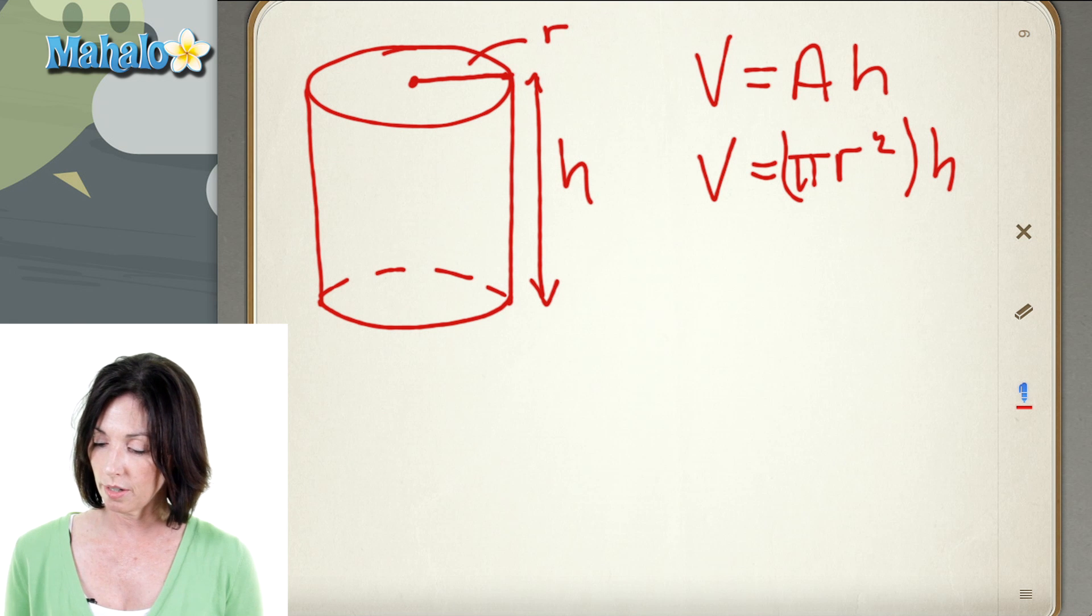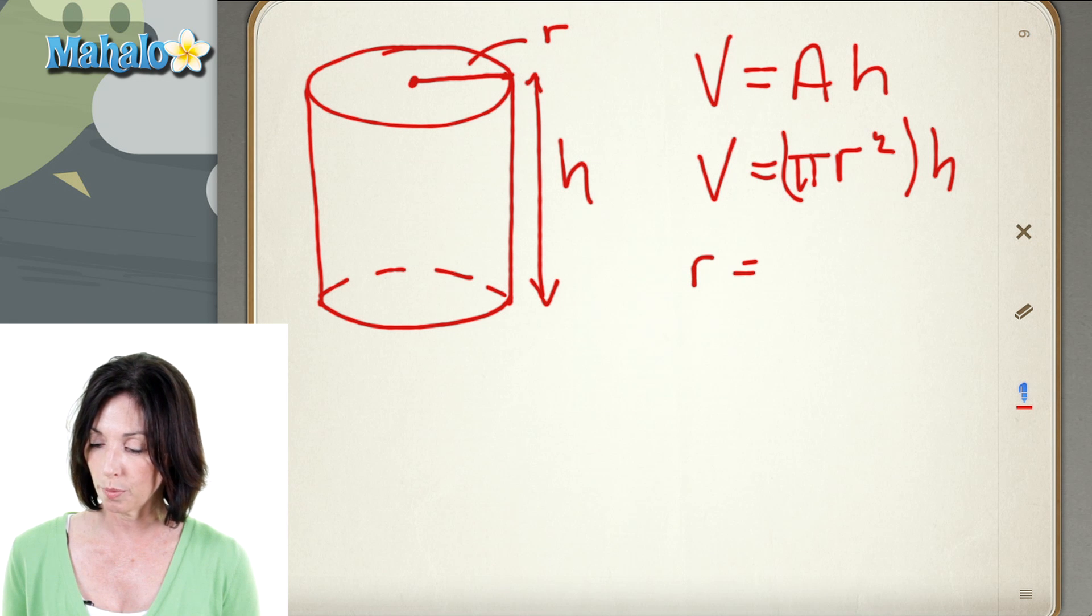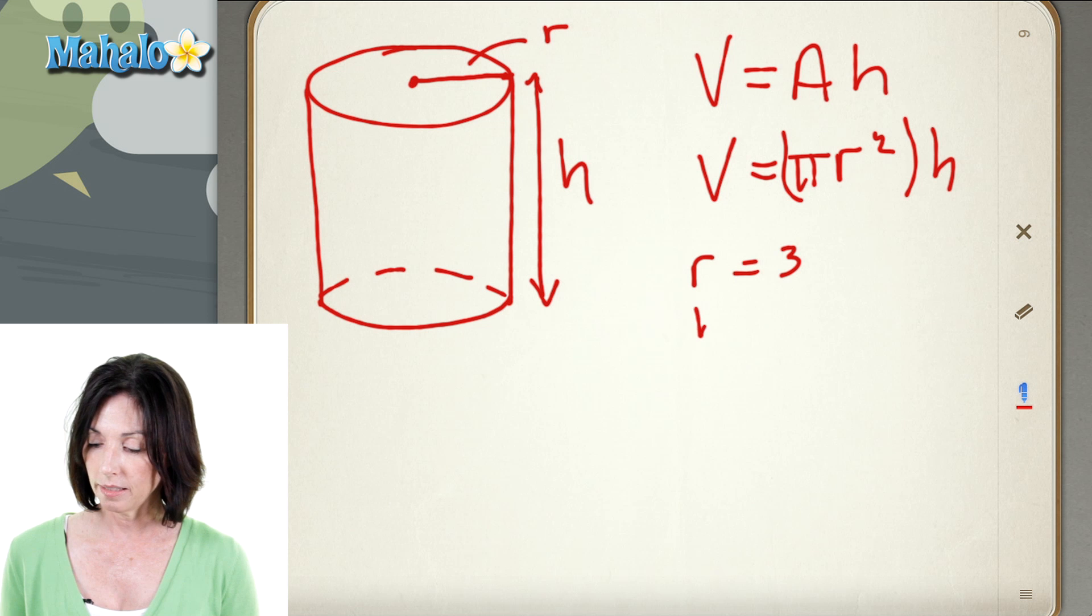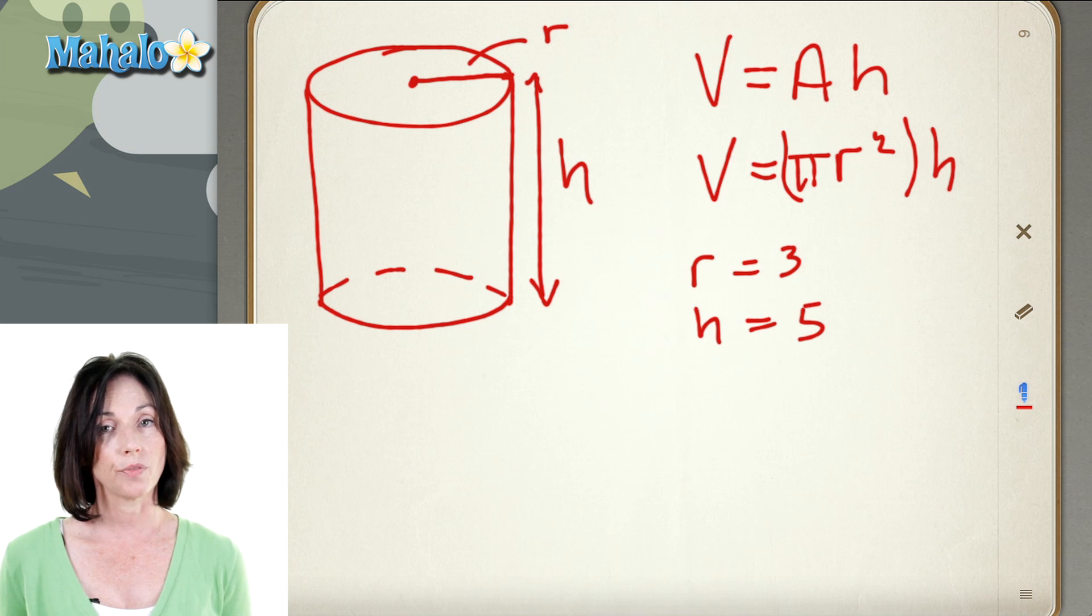So, let's say our cylinder has a radius of three and a height of five. Let's find its volume.